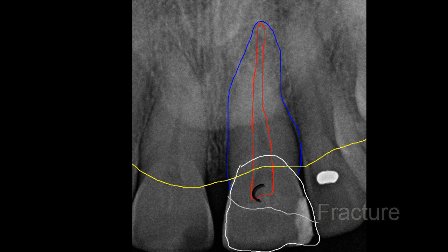When we perform a root canal, an opening is made into the pulpal tissue. This area is cleaned, medicated, and then sealed.